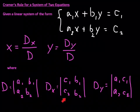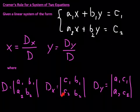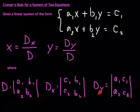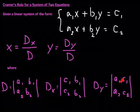D_x is the same as D except the constants have taken the place of the X column — replacing A₁ and A₂. D_y is the same as D except the constants have taken the place of the second column, which is the Y column.